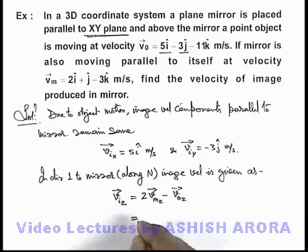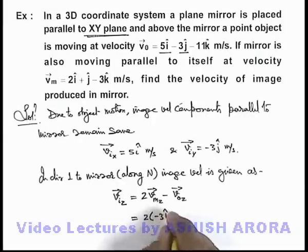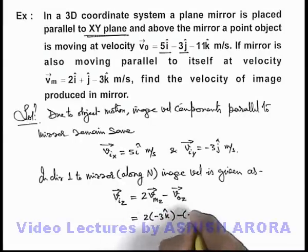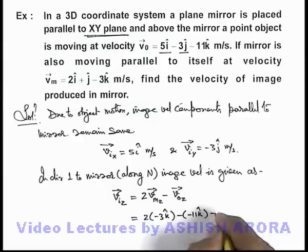So here this can be given as twice of -3k̂ minus of -11k̂, that we'll obtain as +5k̂.